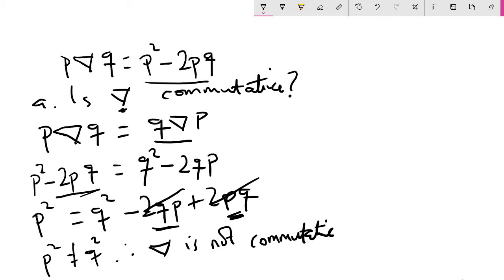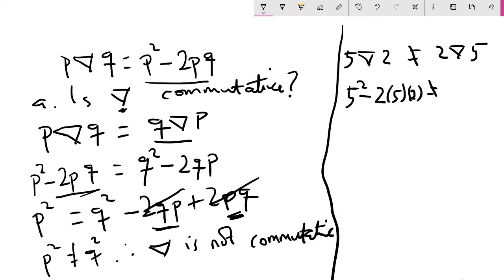Now if you want to test your answer to check whether your solution is right, you can actually just put real numbers here. Let's take 5 and 2. So 5 Delta 2 must not be equal to 2 Delta 5 because we just said it's not commutative. So 5 Delta 2 is the same as 5 squared minus 2 times 5 times 2. This must not be equal to 2 Delta 5.